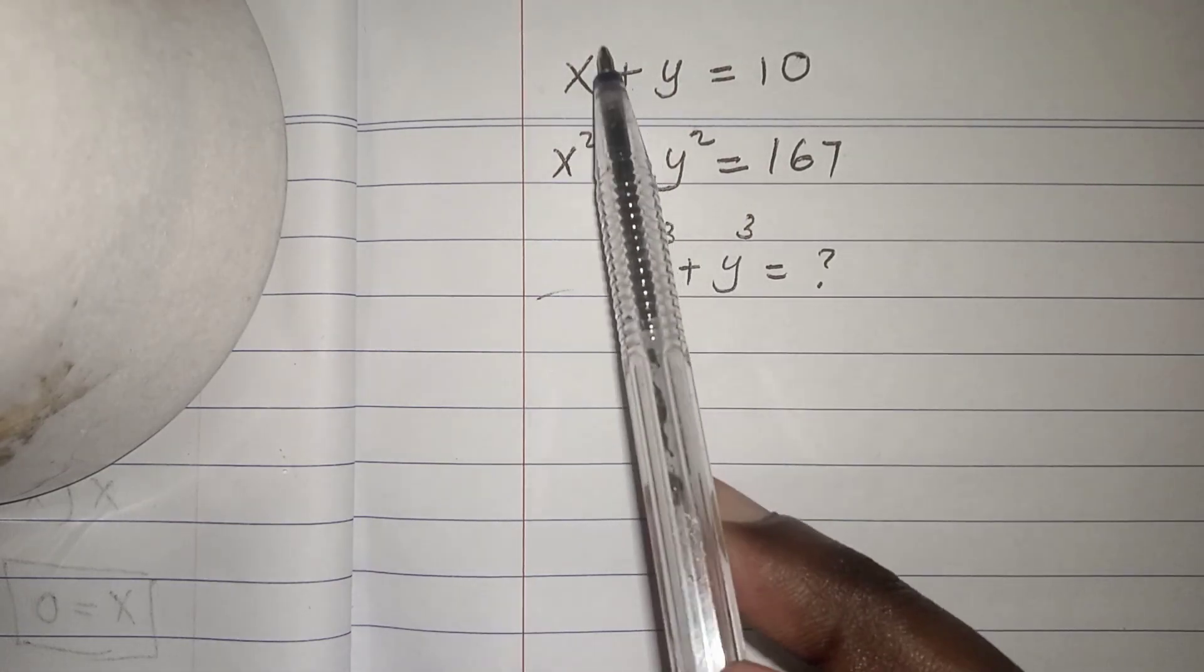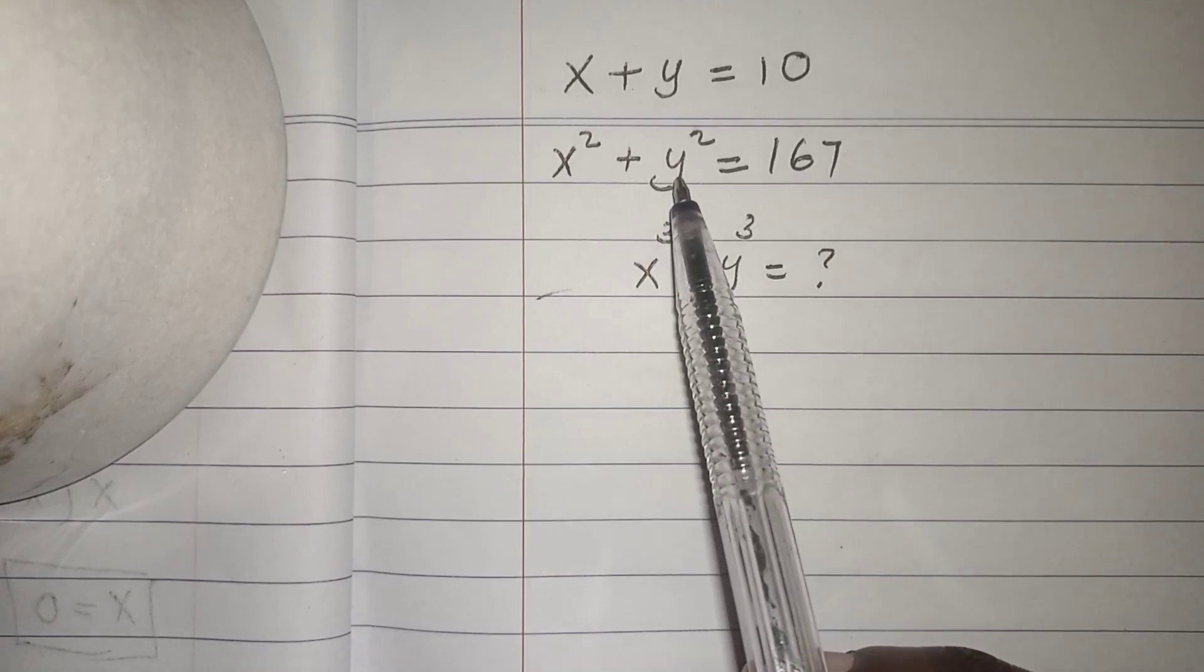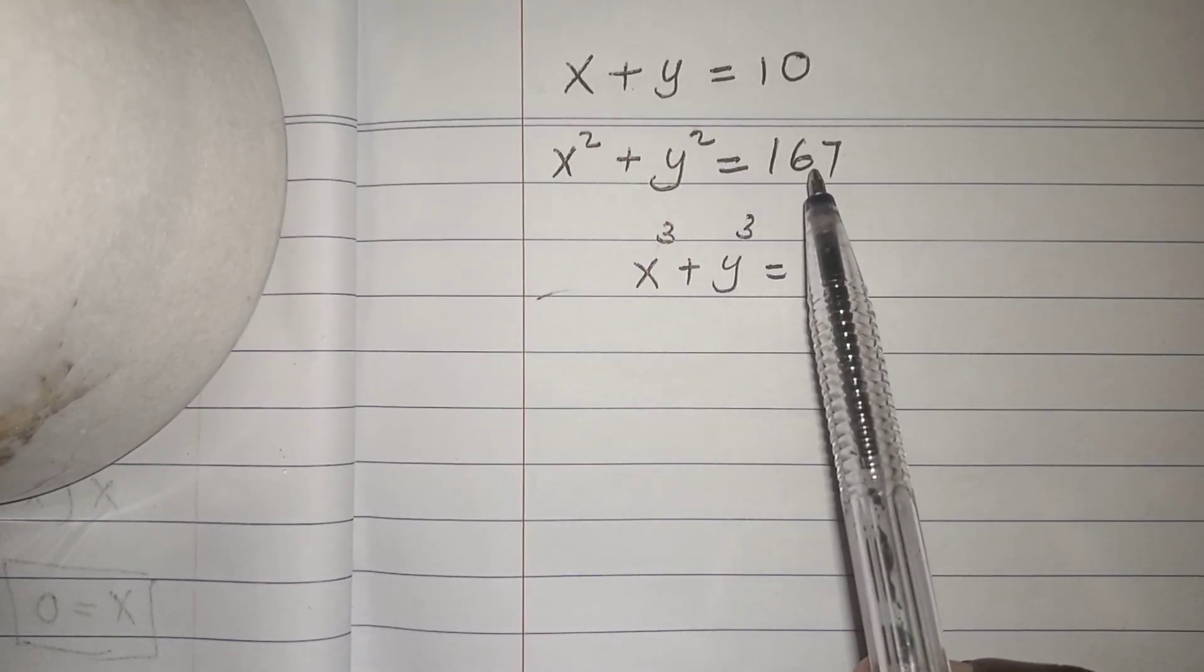When given x plus y equals 10, and x squared plus y squared equals 167.